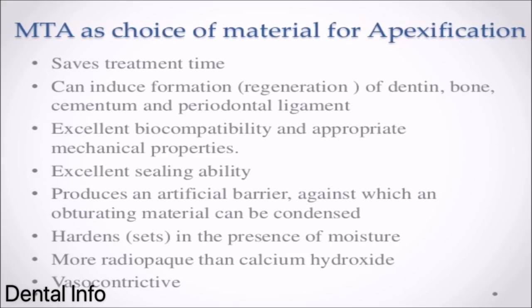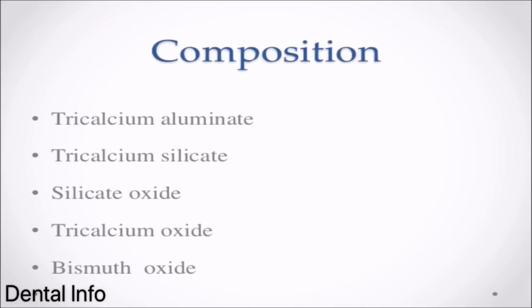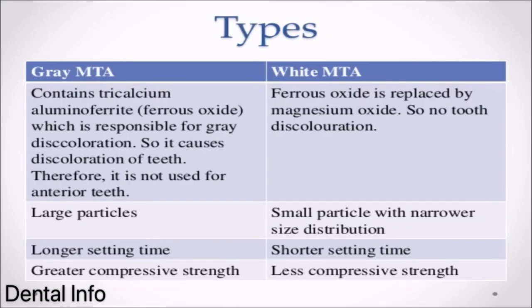MTA properties continued: Vasoconstrictive. Composition: Tricalcium aluminate, Tricalcium silicate, Silicate oxide, Tricalcium oxide, Bismuth oxide. Types: Grey MTA contains tricalcium aluminum ferrate and ferrous oxide, which is responsible for grey discoloration, causing tooth discoloration — therefore not used for anterior teeth. Grey MTA has large particles, longer setting time, and greater compressive strength.